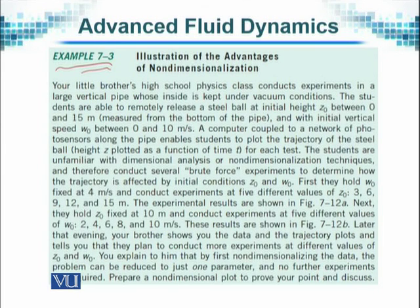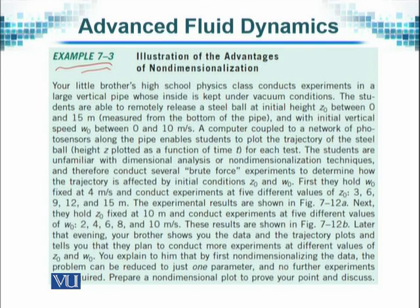The question: your little brother's high school physics class conducts experiments in a large vertical pipe whose inside is kept under vacuum conditions. The students are able to remotely release a steel ball at an initial height Z0 between 0 and 15 meters, measured from the bottom of the pipe — so upward is the positive direction — and with an initial vertical speed W0 between 0 and 10 meters per second.